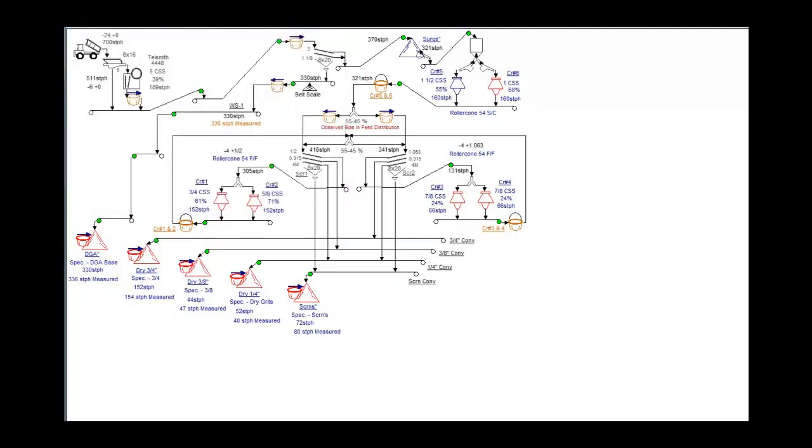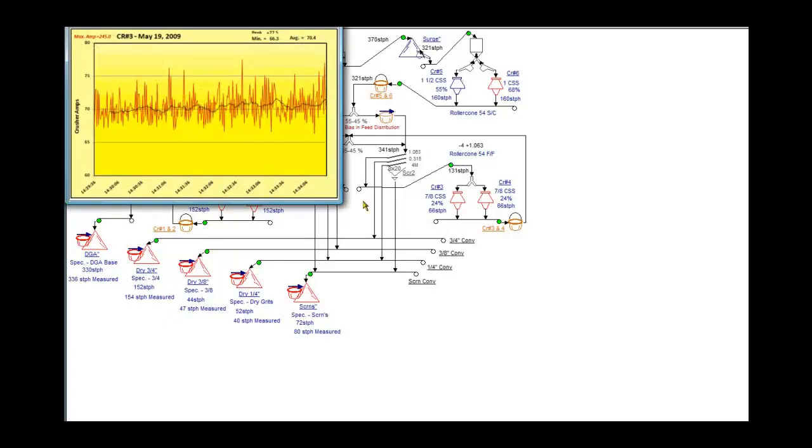Then we go to crusher three. Coarser material, very low rate of feed, comparatively speaking, 70 amps out of 300 amps. Actually that's got a smaller motor. It's only a 200 horsepower motor, so it's a 245 amp. But a very small range, so it's not hurting the crusher, but this is indicating a feed issue.